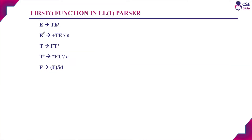The grammar is: E derives TE', E' derives plus TE' or epsilon, T derives FT', T' derives star FT' or epsilon, and F derives open bracket E close bracket or id.